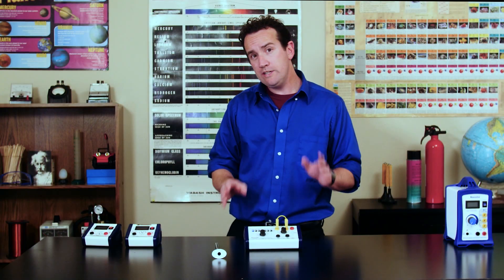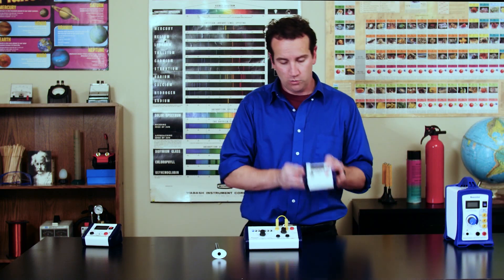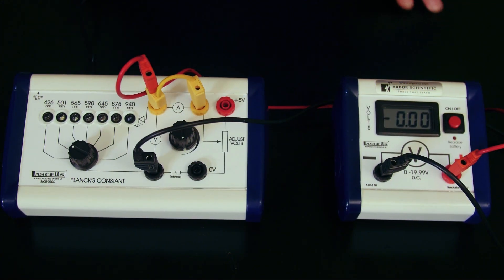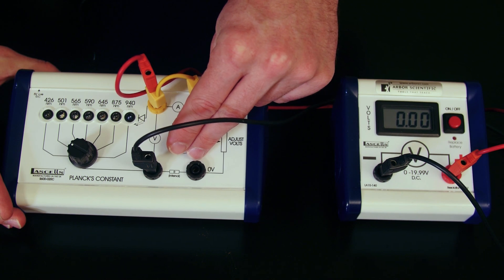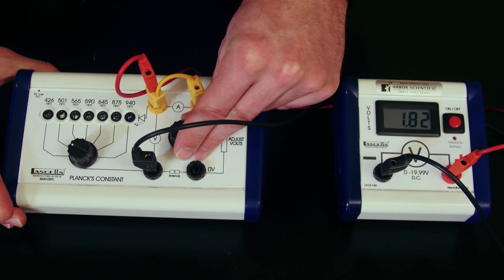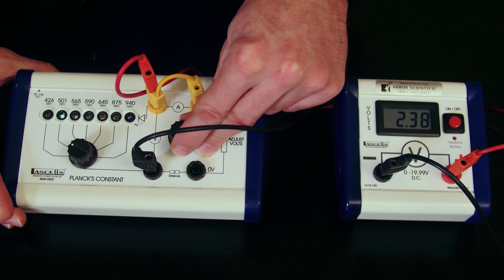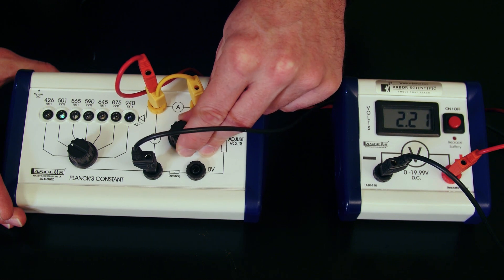You will need a voltmeter to perform this experiment. Here's one, and here's how to hook it up. In a typical experiment, you would change the voltage for each diode and make a note as to what voltage is required for it to barely just turn on.